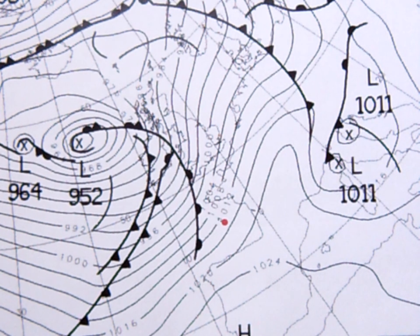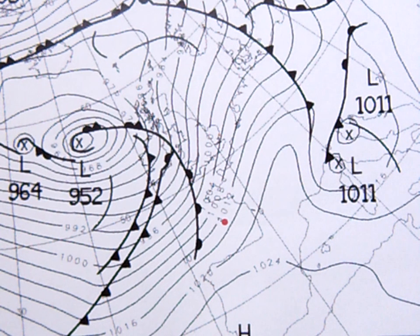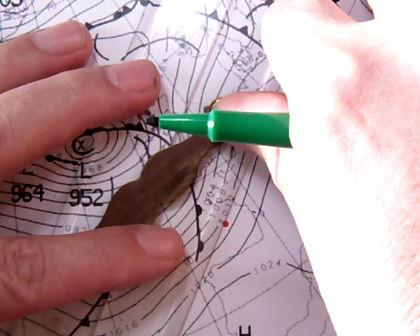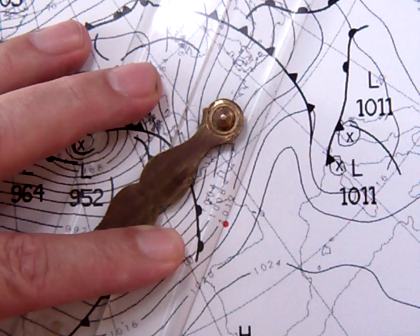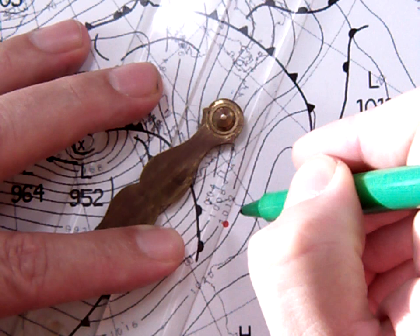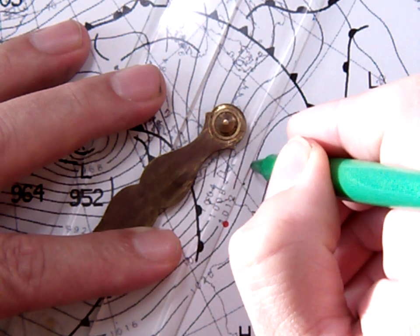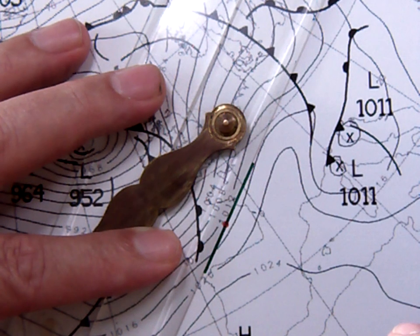So the first thing I have to do is to draw a line going parallel approximately to the closest isobars. So I'm just lining it up and I'm going to draw a line through my point.